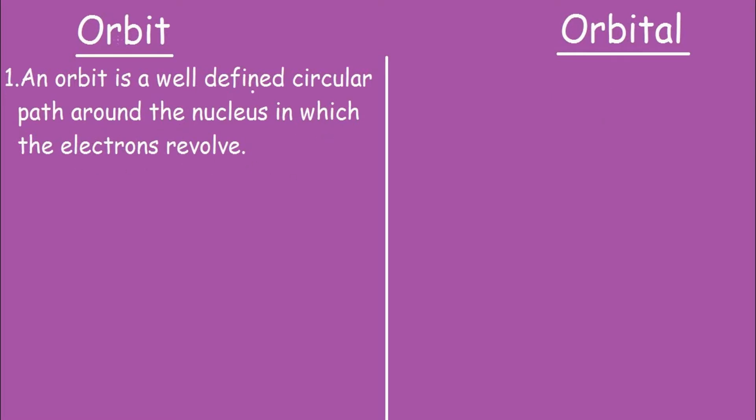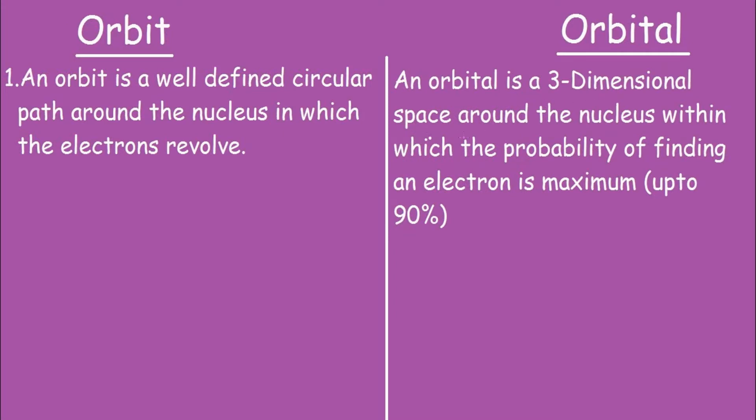And for orbital, an orbital is a three-dimensional space around the nucleus within which the probability of finding an electron is maximum, and it is up to 90%.